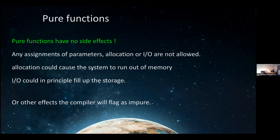Pure functions have no side effects. The keyword `pure` prevents us from screwing up too much. We'll see in a couple of examples how that helps us write Fortran code correctly and without side effects. Allocation is not allowed in pure functions, as it could cause the system to run out of memory. IO is not allowed either, as it could in principle fill up storage. Other effects the compiler will flag as impure.